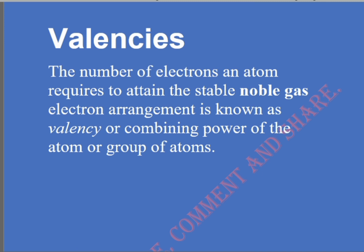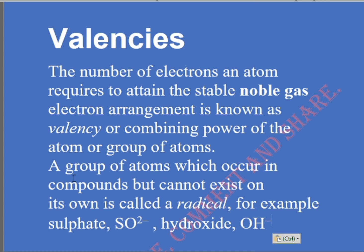Examples of radicals include sulfate, hydroxide, and carbonate. They are groups of atoms which occur in a compound but cannot exist on their own. The oxidation number has a negative or positive sign, unlike valency which does not have a sign — valency has no positive or negative sign before the number.